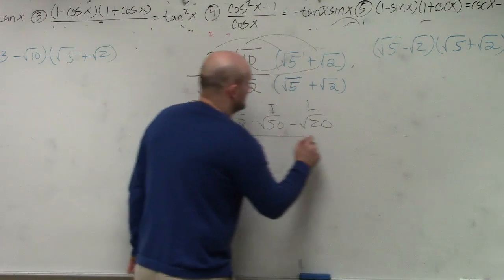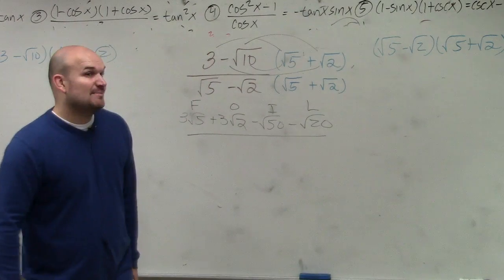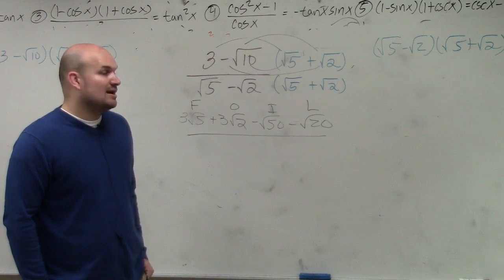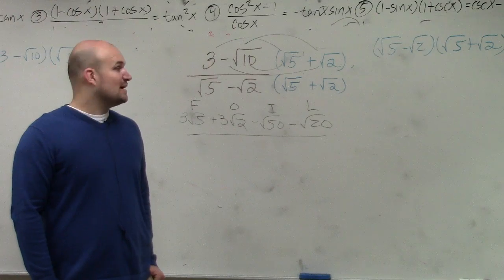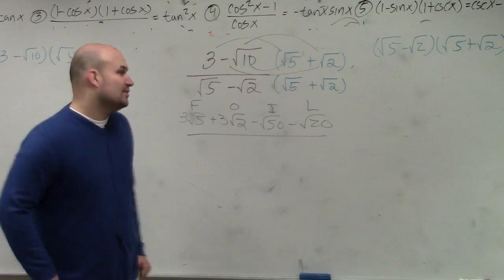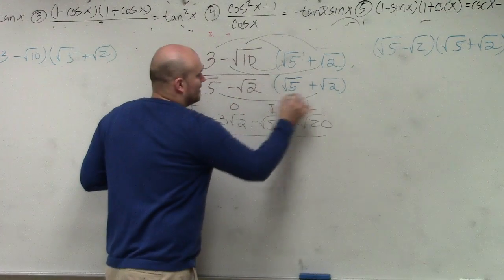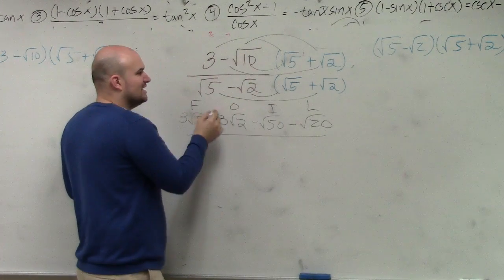Now, what's nice about the denominator, I don't have to go through all those steps because in my denominator, I know it's a difference of two squares. So I could do FOIL, but what I notice is my outer and my inner, my outer and my inner is both going to give me...